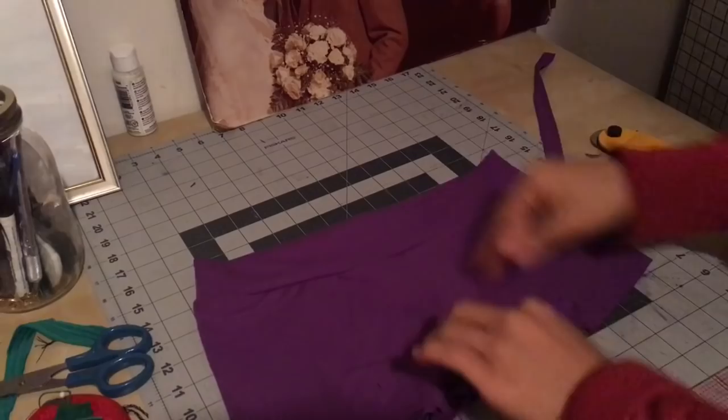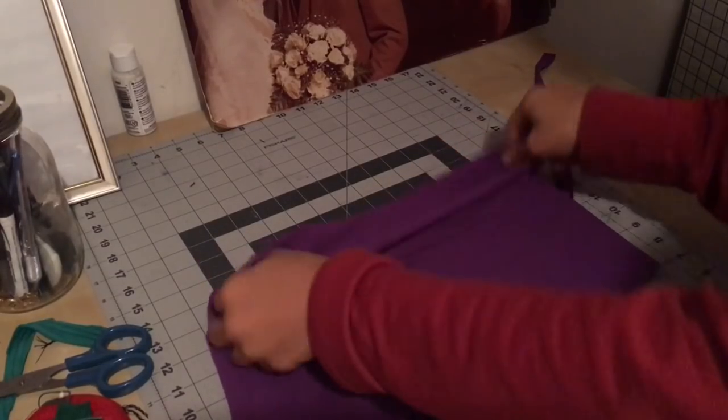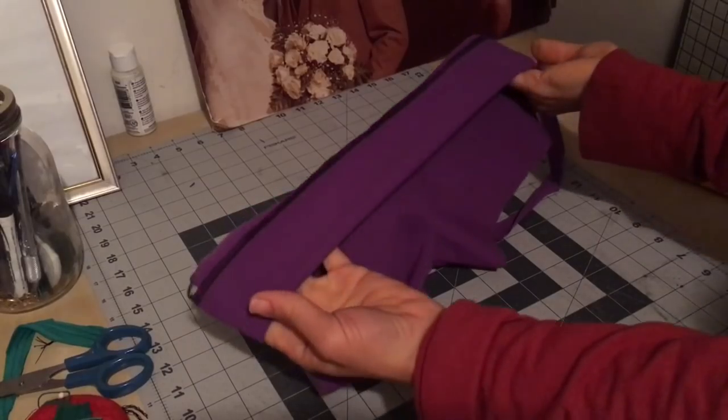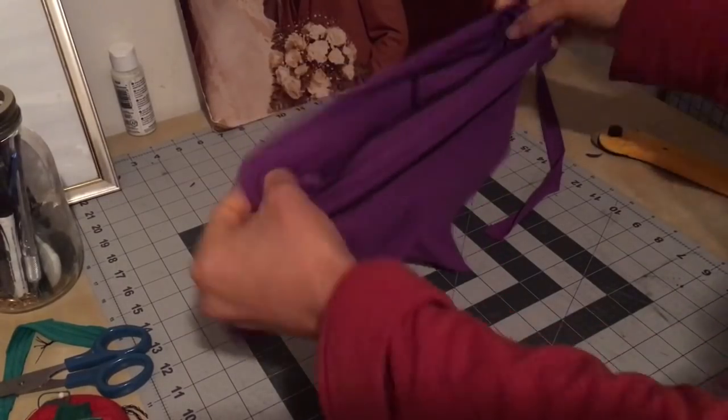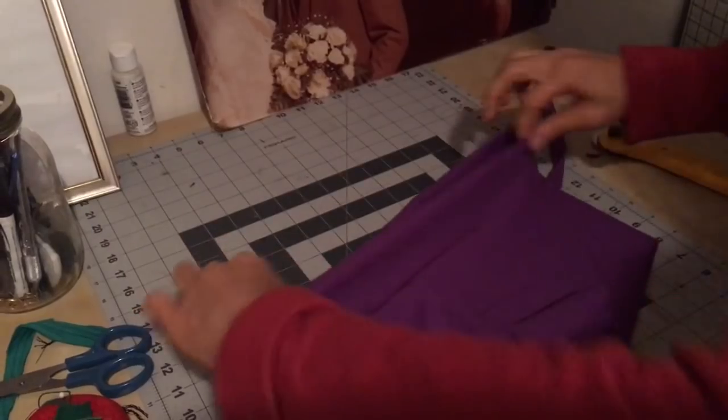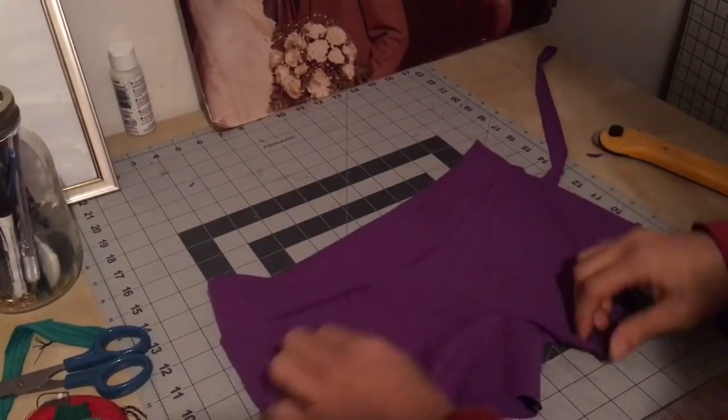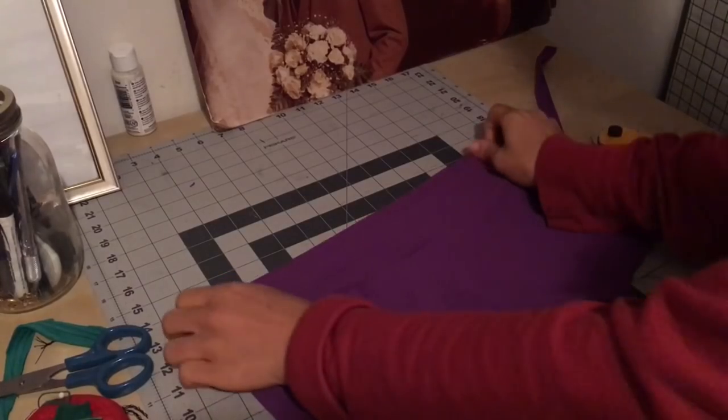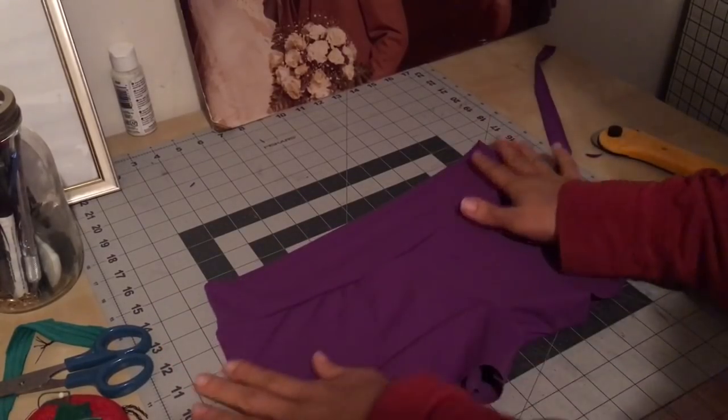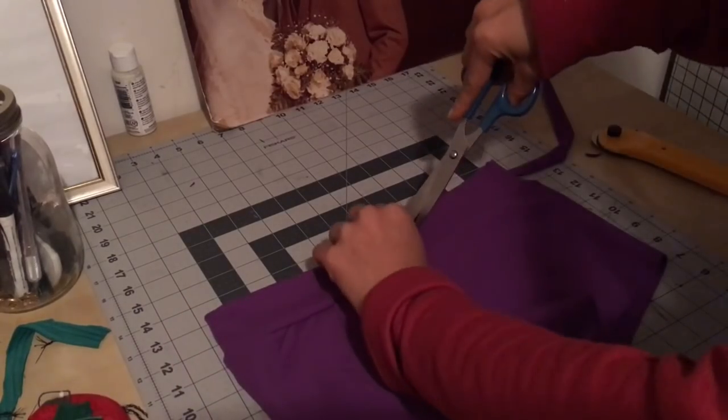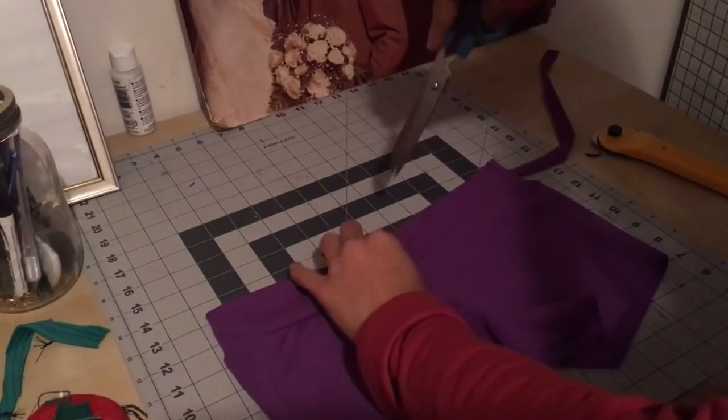You're done entering the waistband. When you flip it under, it would look like this. Now you want to flip it back out, and as you can see, the front waistband is lower than the back. That's why we cut the front piece in that angle.